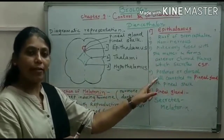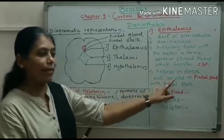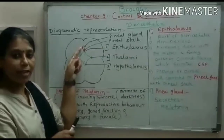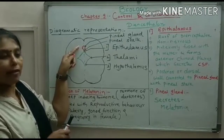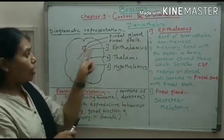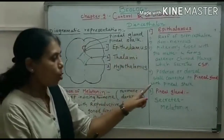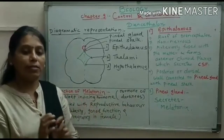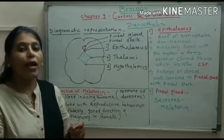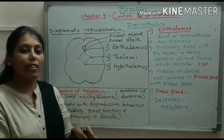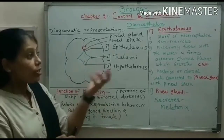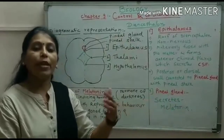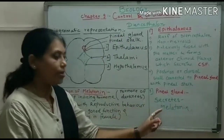On the posterior or dorsal side, the epithalamus is connected to the pineal gland via the pineal stalk. The pineal gland, shown here in red, is an endocrine gland — a ductless gland that secretes hormones directly into the bloodstream. The pineal gland secretes one important hormone called melatonin.